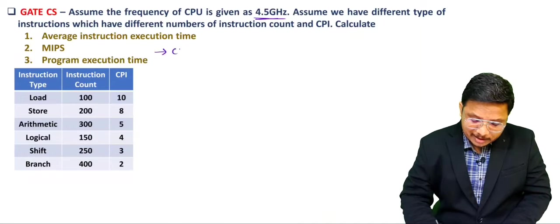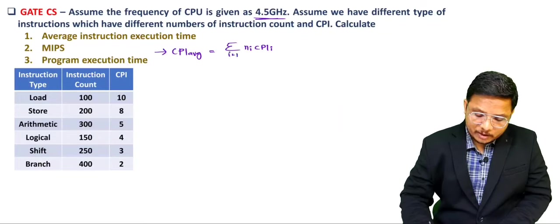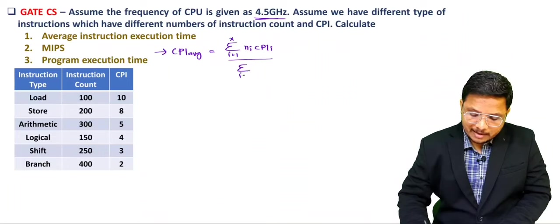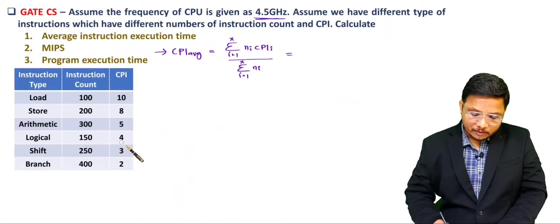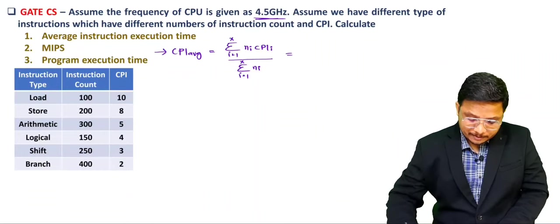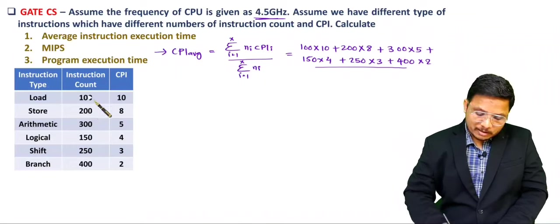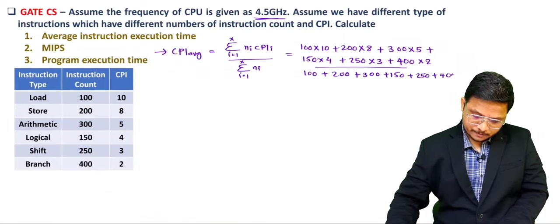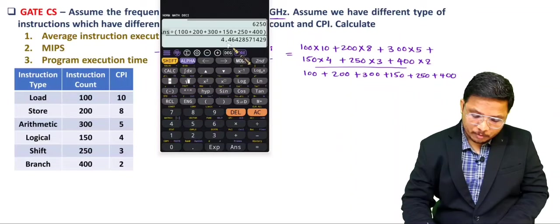The average CPI formula is: (Σ Ni × CPIi) / (Σ Ni), where Ni is the number of instructions in each category. Substituting: (100×10 + 200×8 + 300×6 + 150×5 + 150×4 + 250×3 + 400×T) divided by the total instruction count (sum of all Ni). Solving in the calculator gives average CPI = 4.4642.